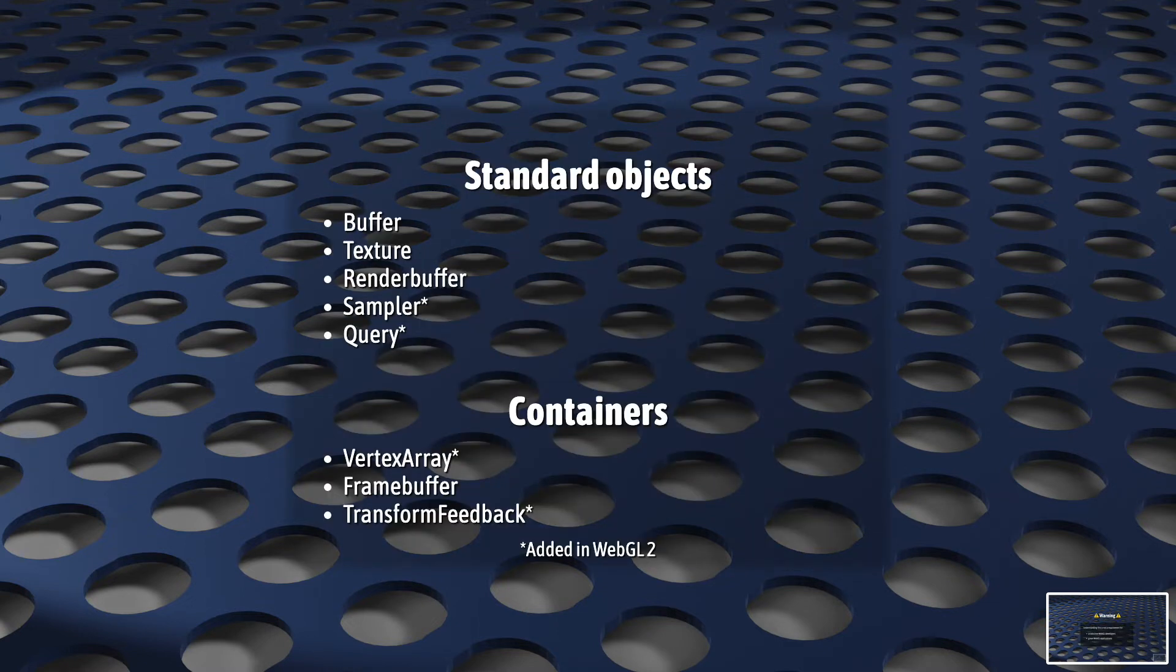So first, what is a WebGL object? Well, here's the list of them. You can see the objects are broken down into broad categories. A buffer object, for example, is just a contiguous block of memory for storing data generically. Not really much more than that.